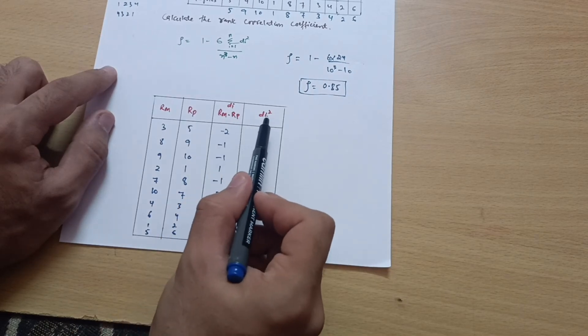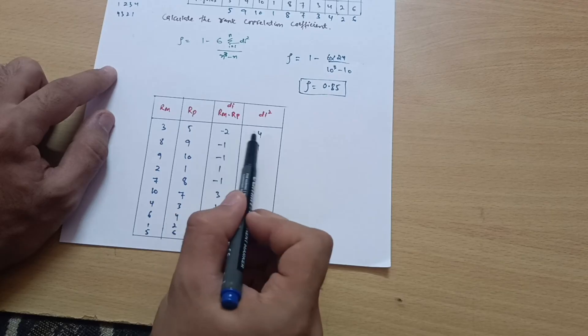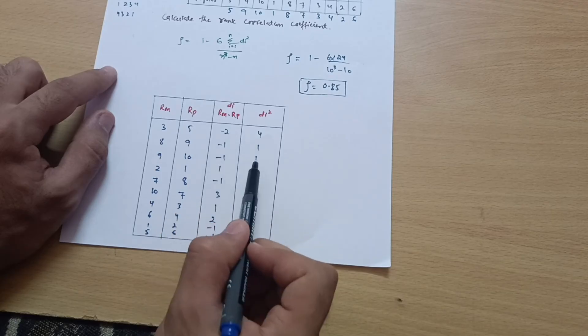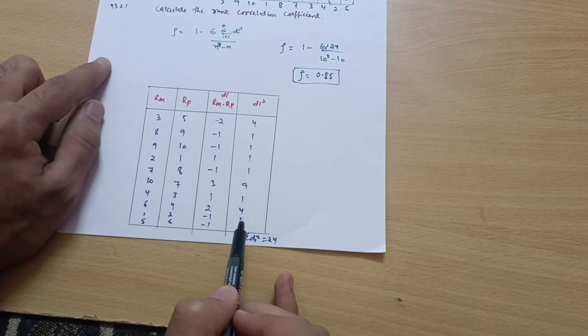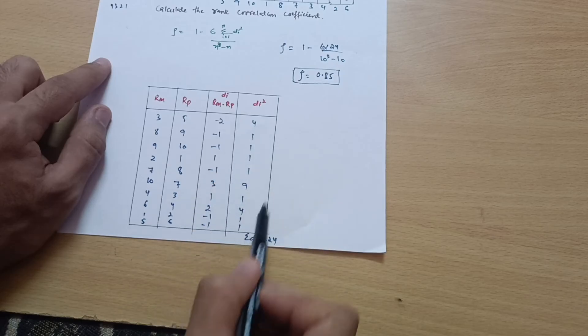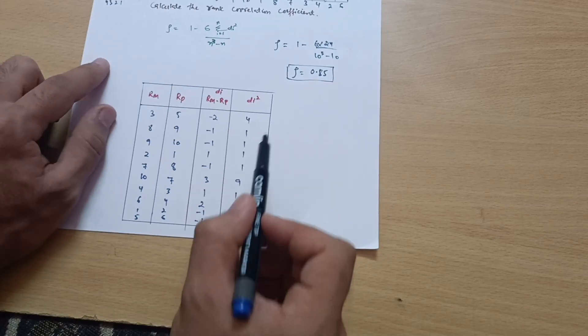Now take the square, di squared. Minus 2 squared is 4, minus 1 squared is 1, 1, 1, 1, 3 squared is 9, 1 squared is 1, 2 squared is 4, minus 1 squared is 1, minus 1 squared is 1.